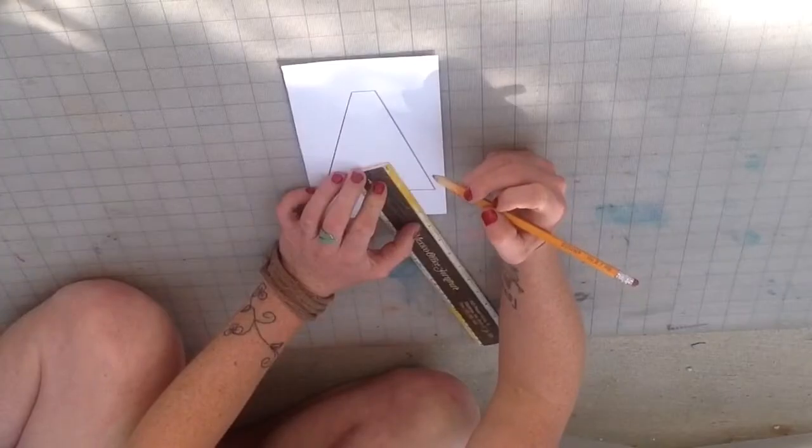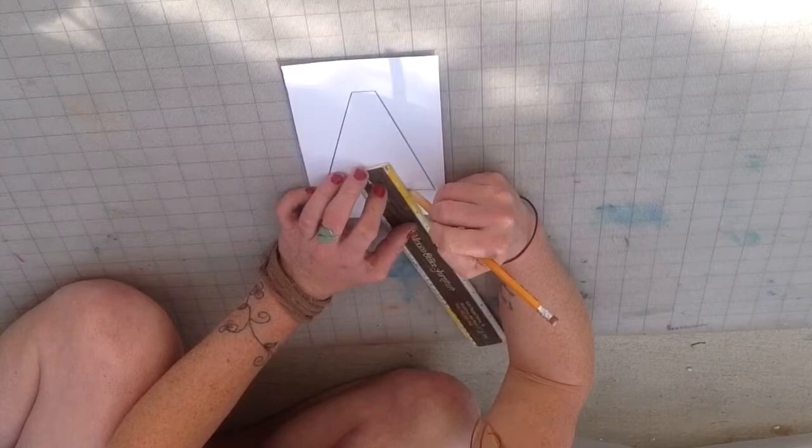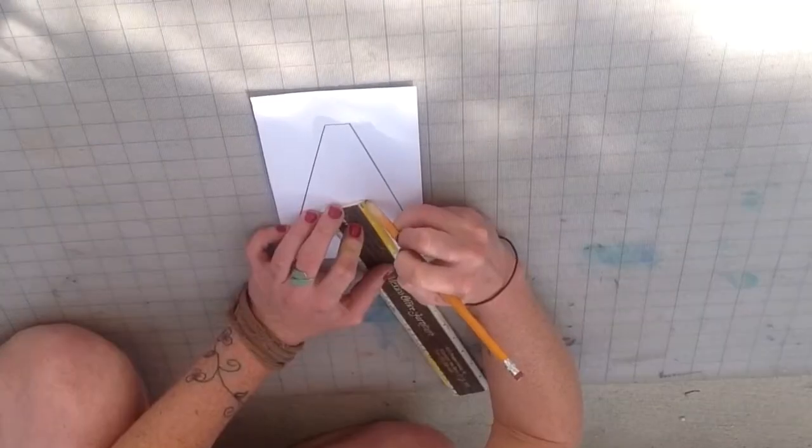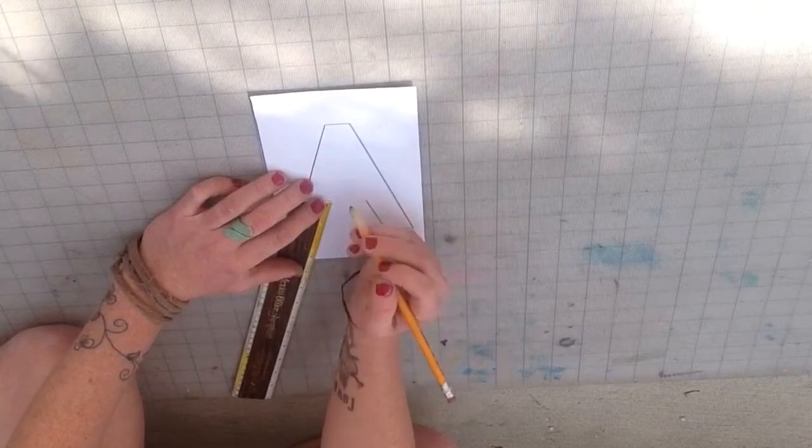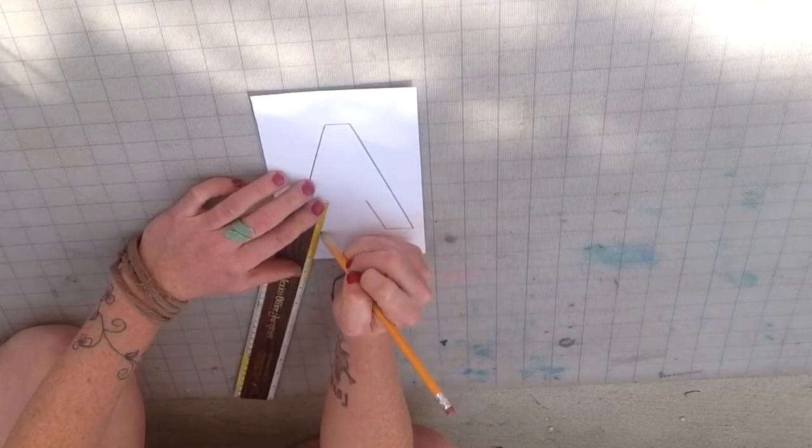For the inner legs of the A, draw a line measuring 1 and 3 quarters of an inch long on each side. Draw these lines at an angle using the top corner as a reference point.